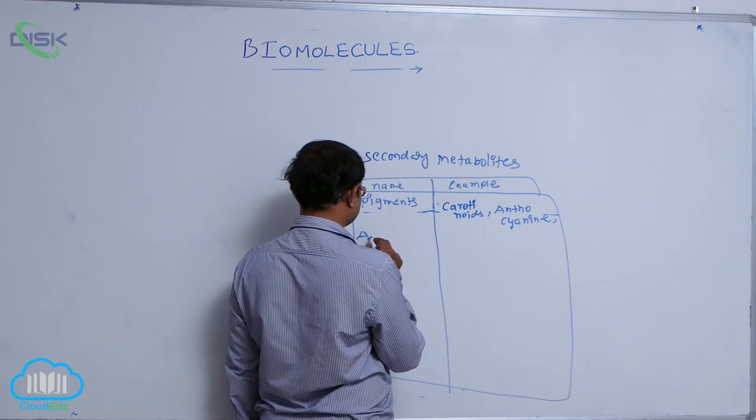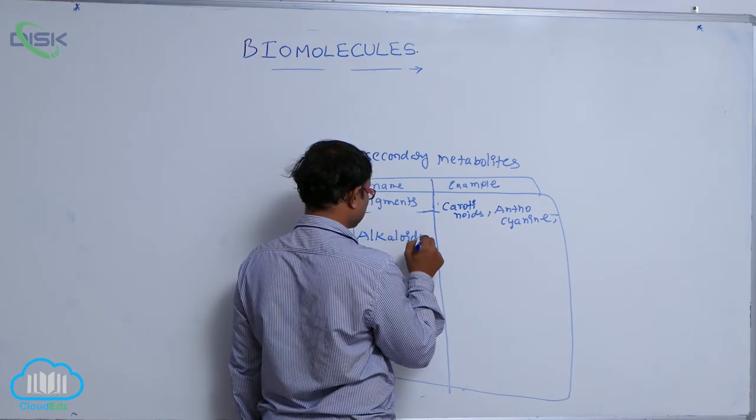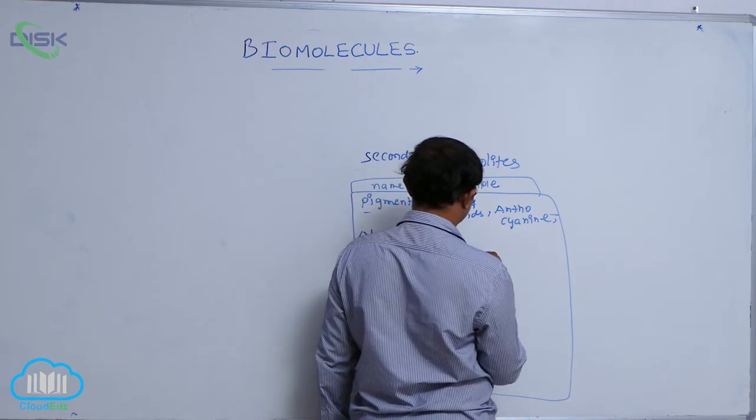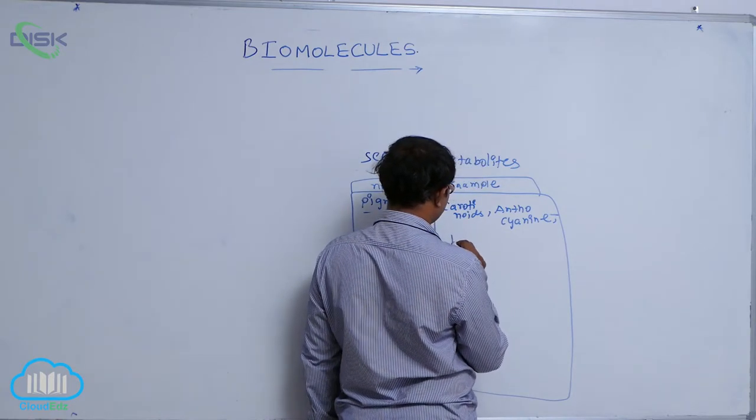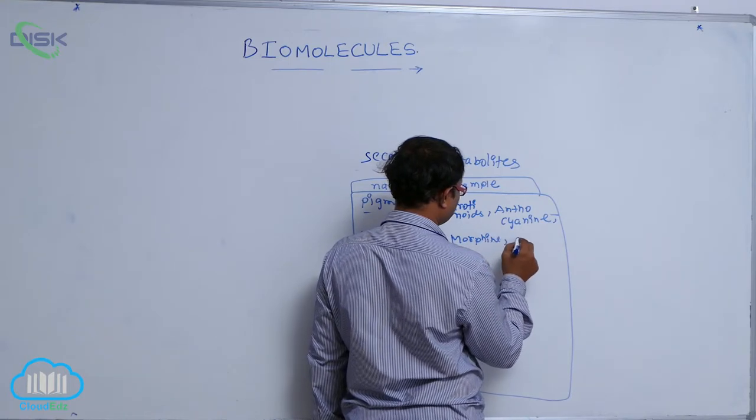After that, alkalides. Alkalides are Morphine, Codeine.